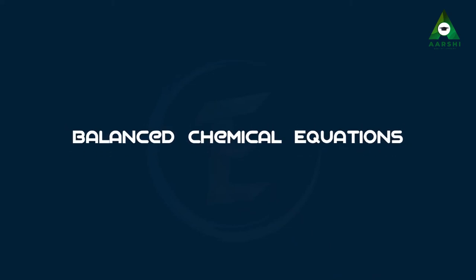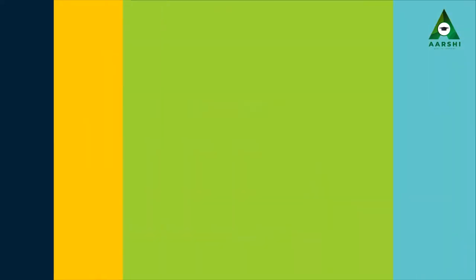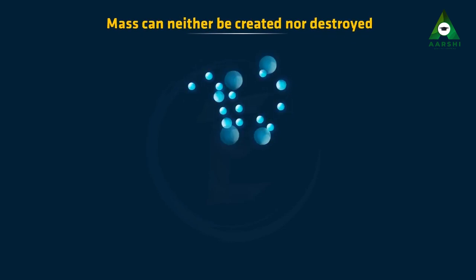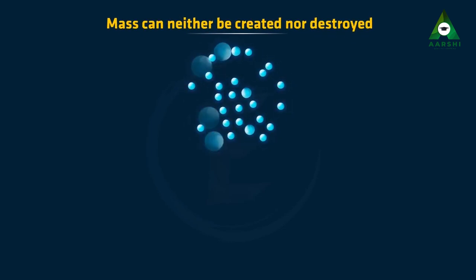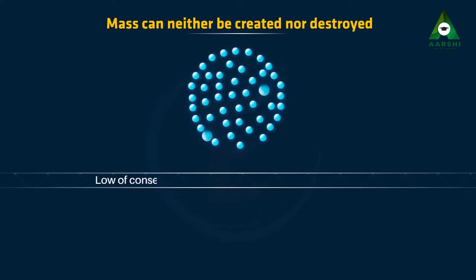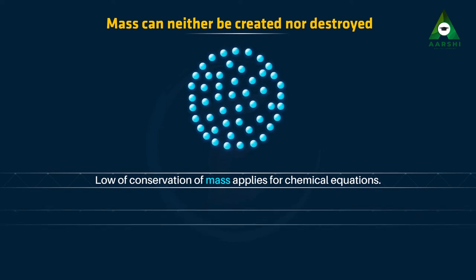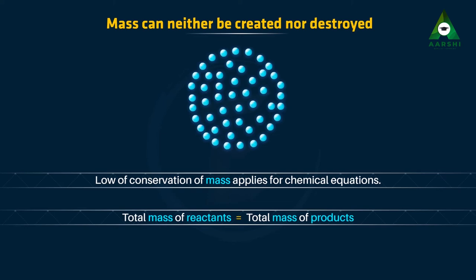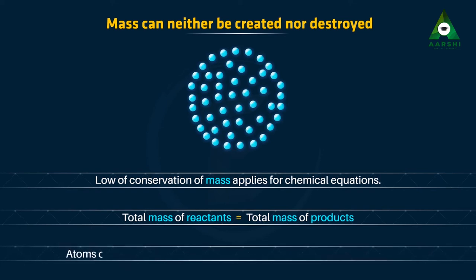Balanced chemical equations. As we know, mass can neither be created nor destroyed. This law applies to a chemical reaction too. This means that the total mass of elements in the products of a chemical reaction has to be equal to the total mass of the elements in the reactants. The number of atoms of each element remains the same before and after a chemical reaction.